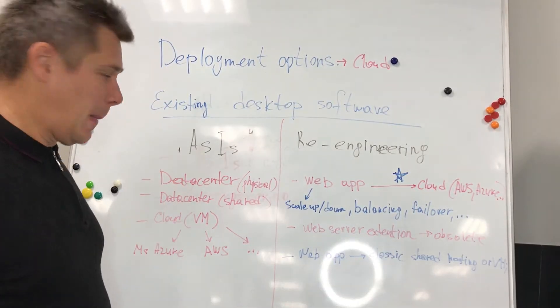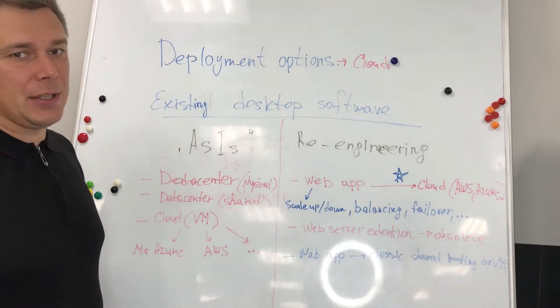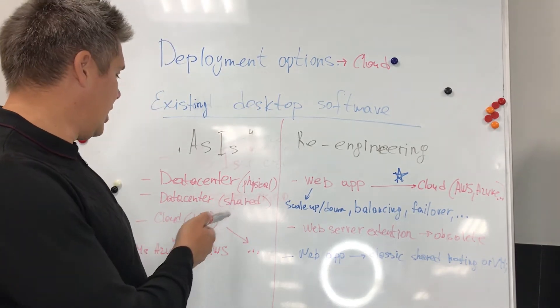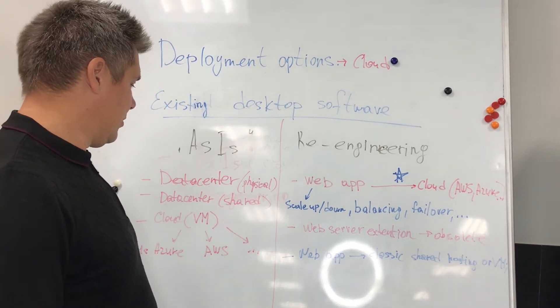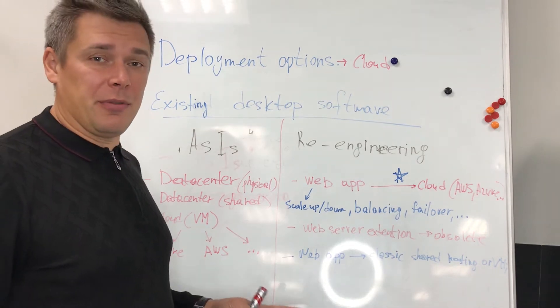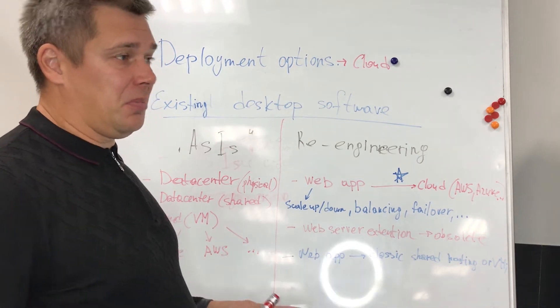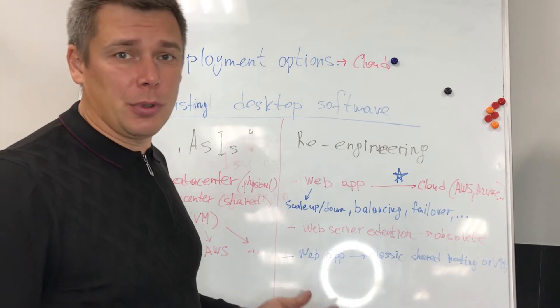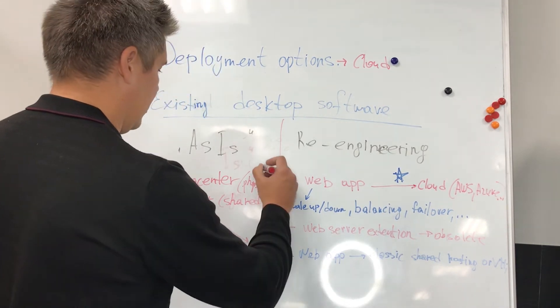Okay, as is. How can we deploy our desktop software without any re-engineering? We can just put it in a data center where you will have a physical machine, deploy your application, and access it via network or VPN network.